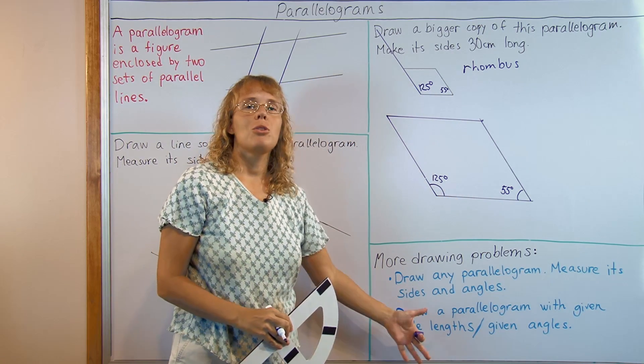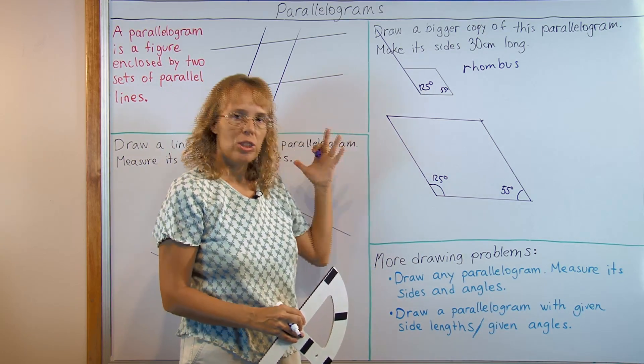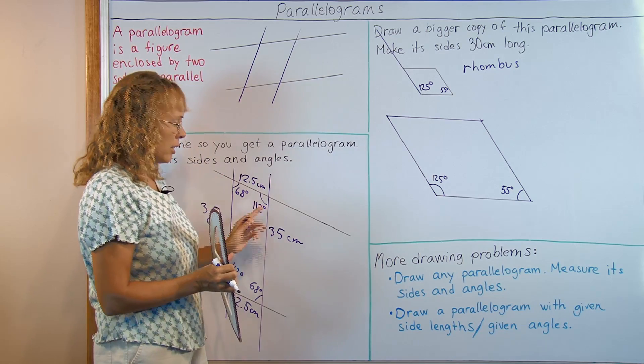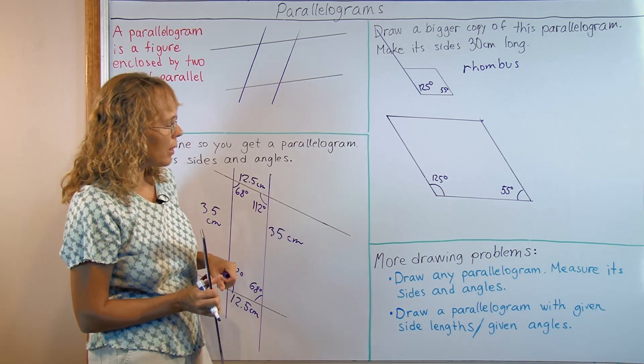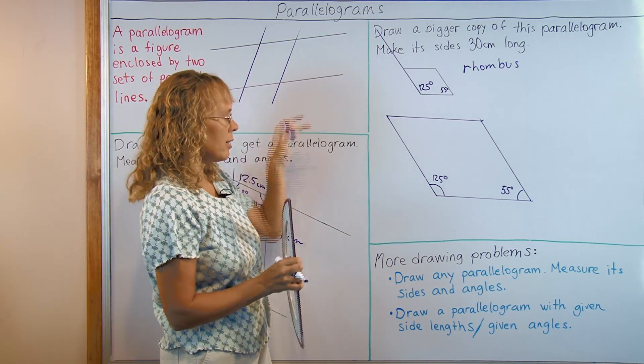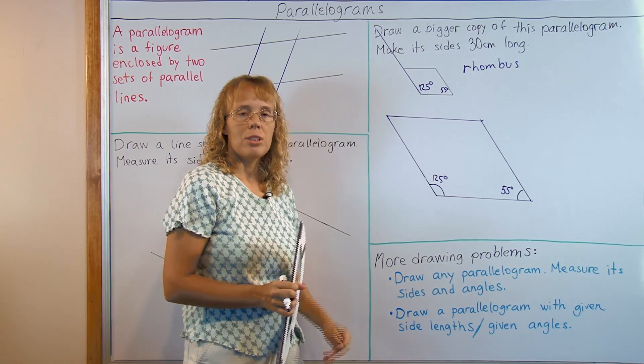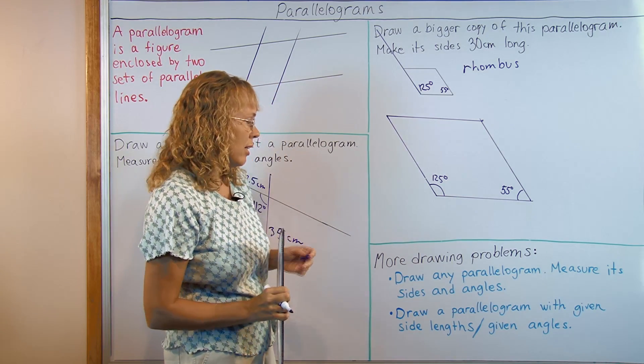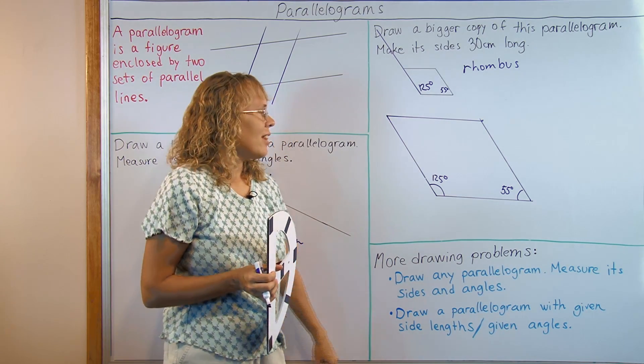And here are some more drawing problems that I'm not going to do here in this video, but they practice further this concept of parallelogram and the concepts of measuring angles, drawing angles and measuring sides. And also the idea that in a parallelogram, the opposite sides are congruent and the opposite corners here are congruent. The angles here and here are congruent. One idea is to draw any parallelogram. The students draw any parallelogram they like by drawing two sets of parallel lines and then measure its sides and angles. Another idea, draw a parallelogram with given side lengths. For example, you tell them that draw a parallelogram where one side is nine inches and another one is three inches. And then they can measure the angles from that. Or draw a parallelogram with given angles. And then they can measure the sides.